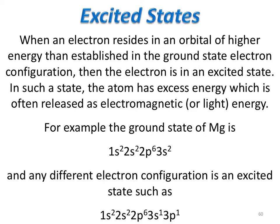Thus far, we have been talking about ground state electron configurations — putting electrons in their lowest possible energy, with parallel spins according to Hund's rule. However, electrons don't always stay in the ground state. Just look at a fluorescent light bulb or a neon discharge tube: once we add electricity or energy, electrons move into excited states. There is generally only one ground state and multitudes of excited states.